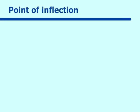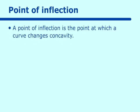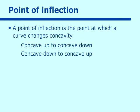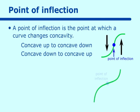Our last idea is point of inflection. A point of inflection is the point at which a curve changes concavity — that means the curve changes from concave up to concave down, or from concave down to concave up. A curve going from holding water to spilling water, or spilling water to holding water, marks the point of inflection.